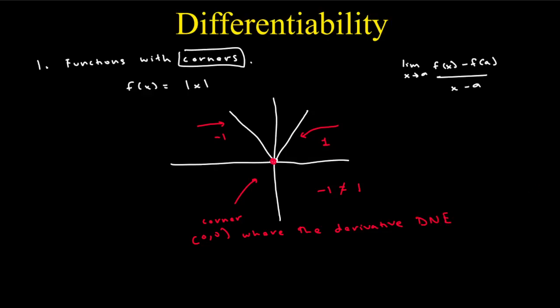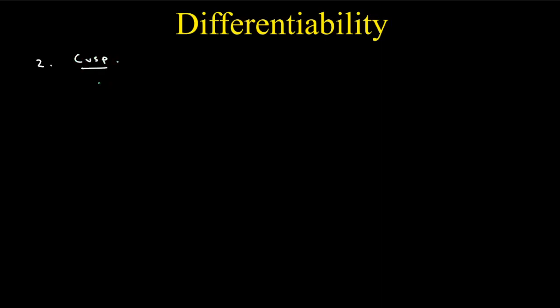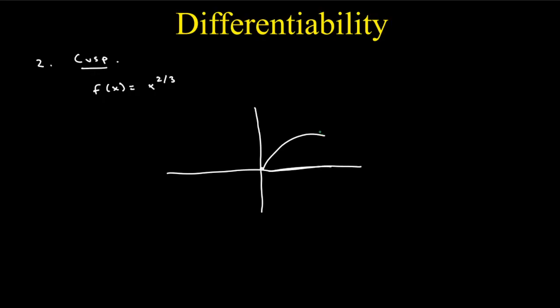Our second example is something called a cusp. An example of a cusp is f of x is equal to x to the power of 2 over 3. When we graph that, we get a curve that has a sharp point at the origin — similar to our corner, we have a sharp change.